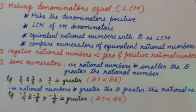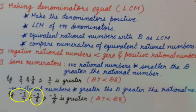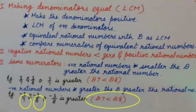If the rational numbers are negative with the same numerators, then greater the denominator, greater the rational number — meaning if the denominator is greater, the rational number will be greater. For example, comparing −3/7 and −3/8, −3/8 will be greater as denominator 8 is greater than denominator 7.